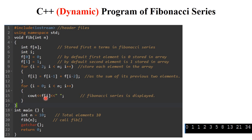The first for loop is used for adding previous elements to generate subsequent elements. The second for loop is used to display the Fibonacci series. To display all numbers in the array, the loop starts from the 0th location to less than n (i.e., 0 to 9), with i++, printing all elements stored in f[i].